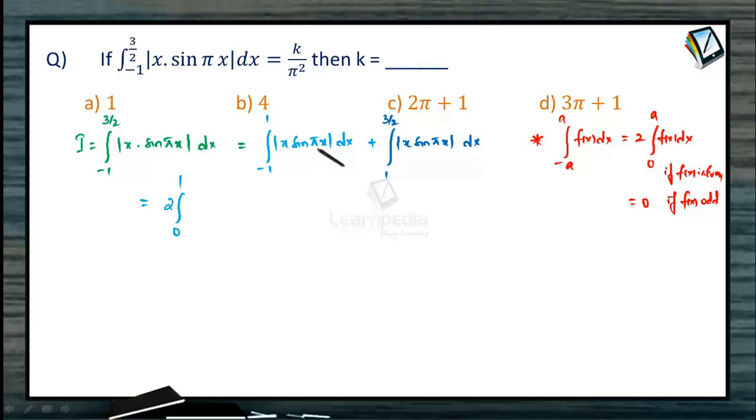So by using this result can we write it as 2 times integral 0 to 1. Is this positive or negative? Yes. Between 0 to 1, x is positive. Sin pi x is positive. Therefore the function is x sin pi x dx plus.